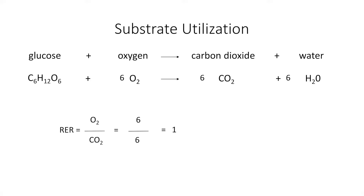So an RER of one means that you're burning only carbohydrates. Now you can do this same thing, but rather than glucose, you put fat in the formula and match it again. And then you'll see that you get a value of 0.7. So 0.7 means that you're only burning fat as fuel, and a value between 0.7 and one means that you're burning a combination of fat and carbohydrates as fuel. So by measuring the oxygen that you consume and the carbon dioxide that you produce, you can calculate how much fat and carbohydrates you burn during exercise.